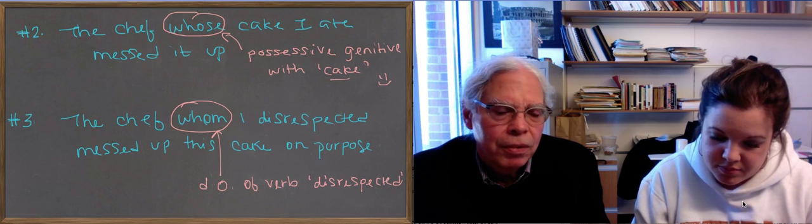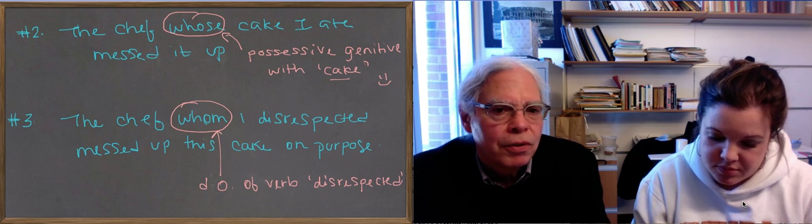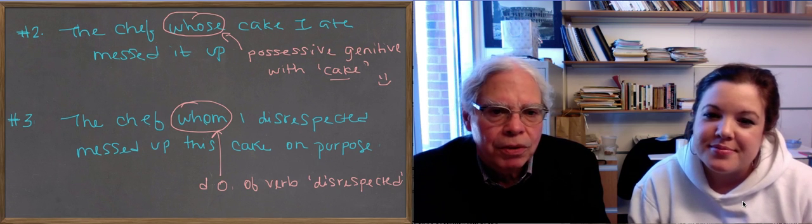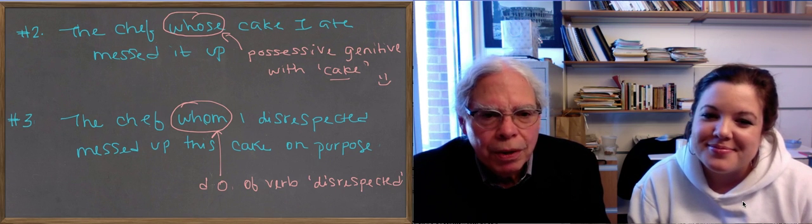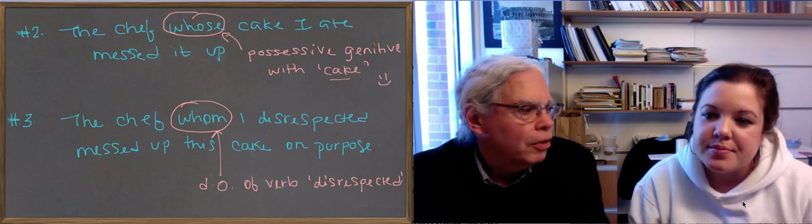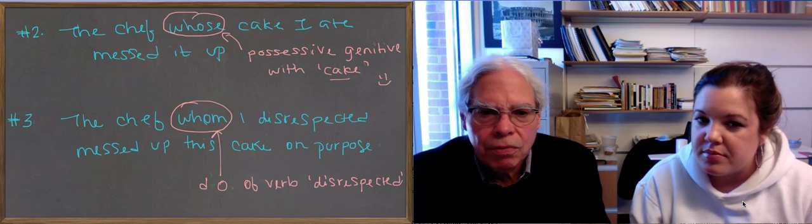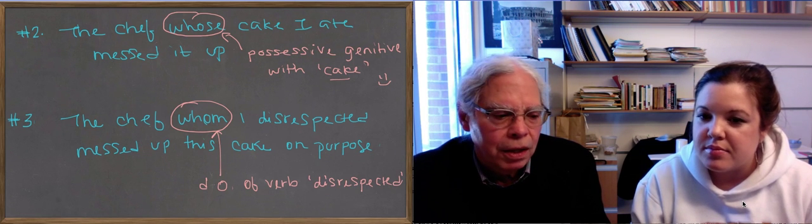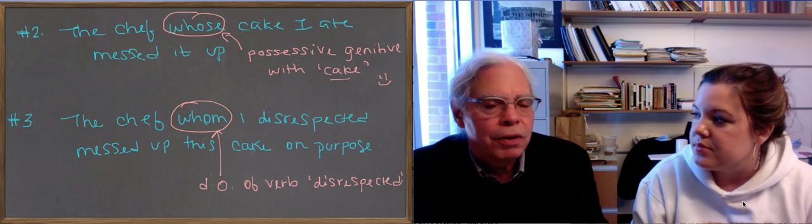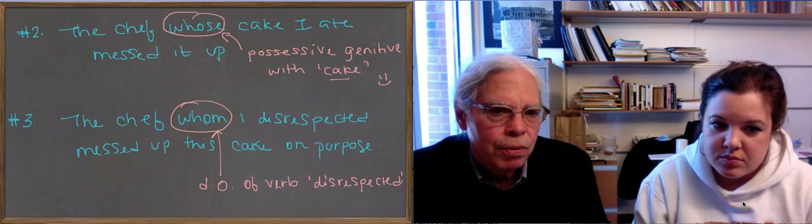The last example is whom, which is the accusative case of who. The chef whom I disrespected messed up this cake on purpose. The whom is the object of the verb disrespected. You can see you can do any of the three things that these three case endings want, and it's all happening inside the relative clause. That's the determiner of the case of the pronoun: who, whose, or whom.